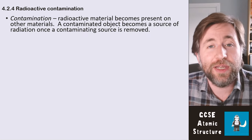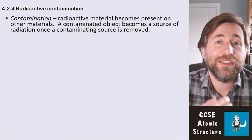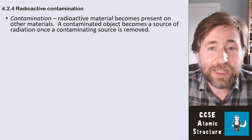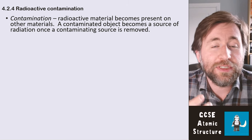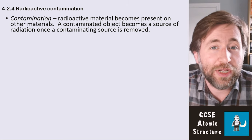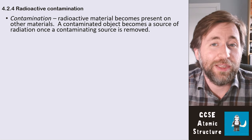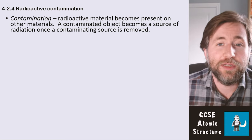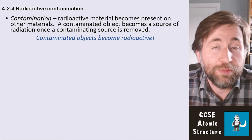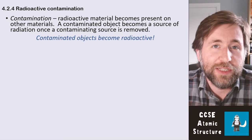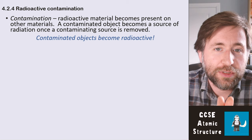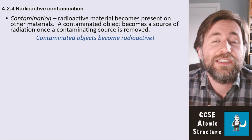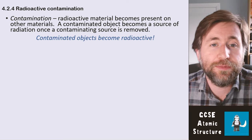The first is contamination. That's when a radioactive material becomes present on another material. A contaminated object becomes a source of radiation after you've taken away the contaminating source — you've left some radioactive particles on an object that wasn't radioactive before. Importantly, the contaminated object becomes radioactive itself; it becomes a source of radiation.